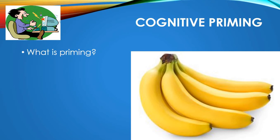Good afternoon Year 13 psychologists. Welcome to the next video. This afternoon we're going to be looking at the third and final explanation of media violence: cognitive priming. That'll be the aggression topic complete, and then all you've got left to finish is our final paper three topic, which is cognition and development, but we'll come to that in due course.